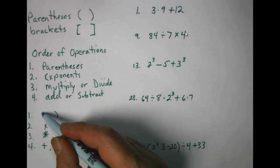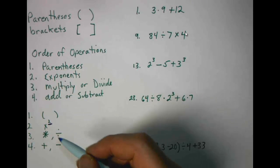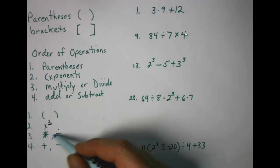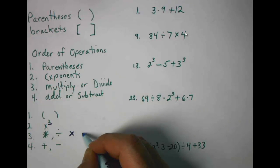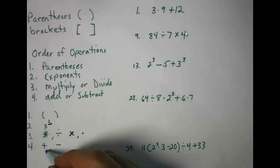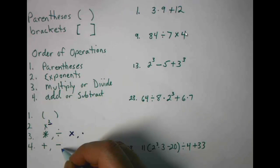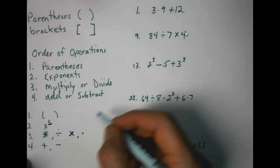The first rule is going to be parentheses, then exponents, multiplication or division, and then addition or subtraction — and it's in that order. Put these in your notes; you're going to need these a lot in future chapters. You'll probably see multiplication written as a symbol or a dot. Either one is going to be your multiplication.